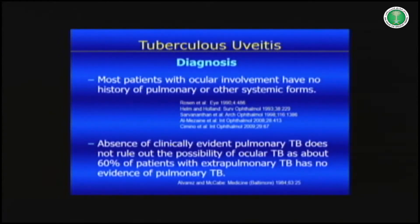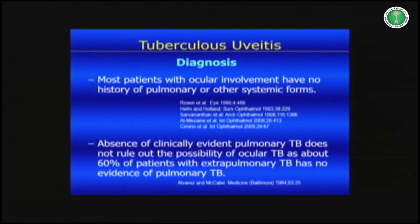Most patients with tuberculosis uveitis have no history of pulmonary or other systemic forms. We consider ocular TB as a subtype of extra-pulmonary TB — a position we had to argue for and eventually won. You don't need evidence of pulmonary involvement to diagnose ocular TB. The absence of clinically evident pulmonary TB does not rule out ocular TB, as about 60% of patients with extra-pulmonary TB have no evidence of pulmonary TB.